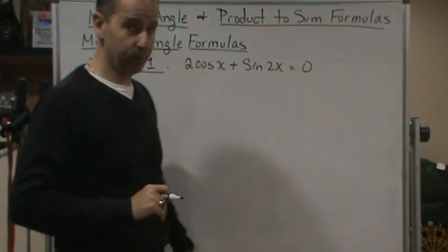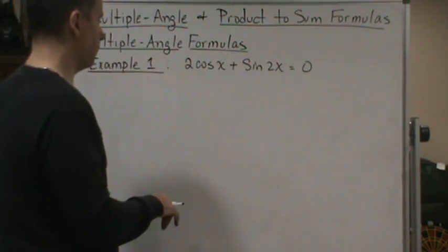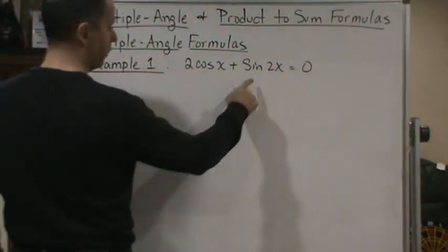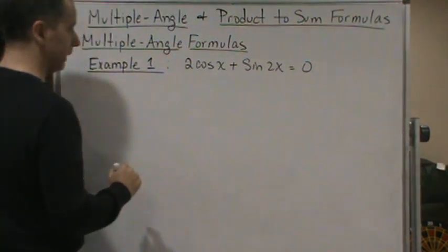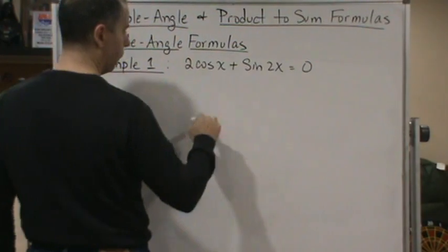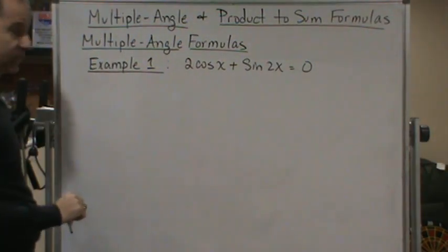All right, so here's our first example. In this example, we're going to solve this equation here. The first thing we're going to do is use the double angle identity to rewrite the sine 2x, because we've got cosine x sine 2x. We want to get everything in terms of x.